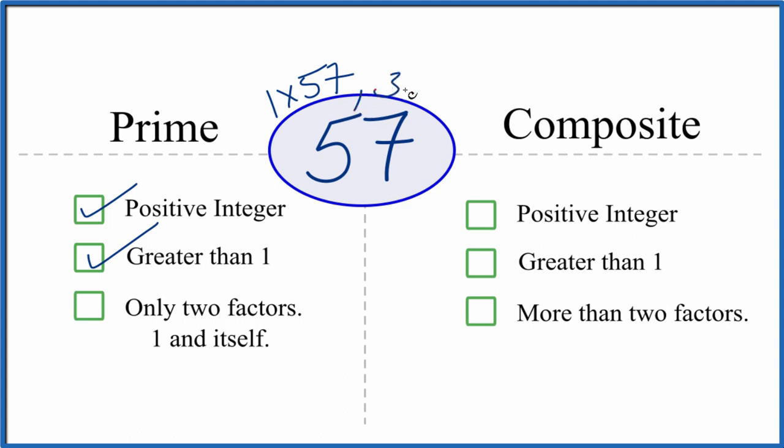Well, it turns out that 3 times 19, that's 57. So there are more than two factors. So 57, it's not a prime number.